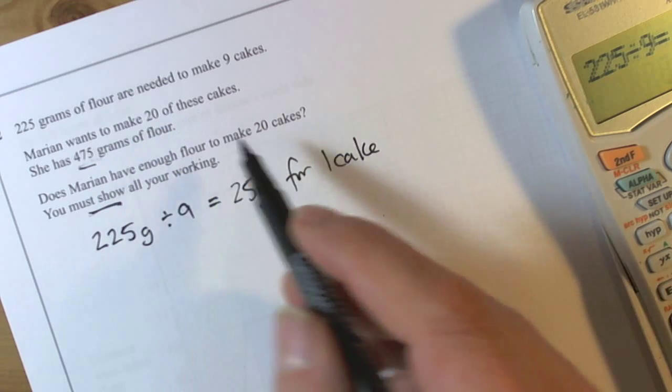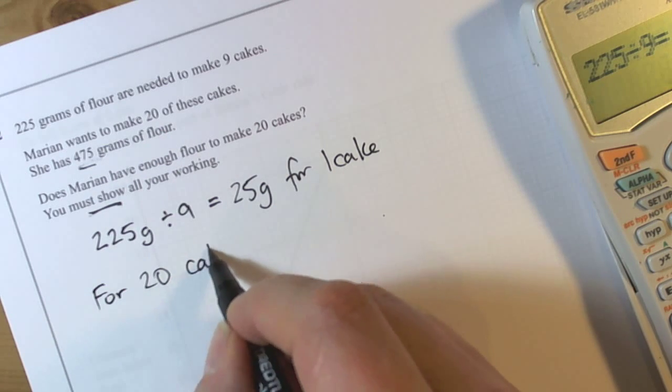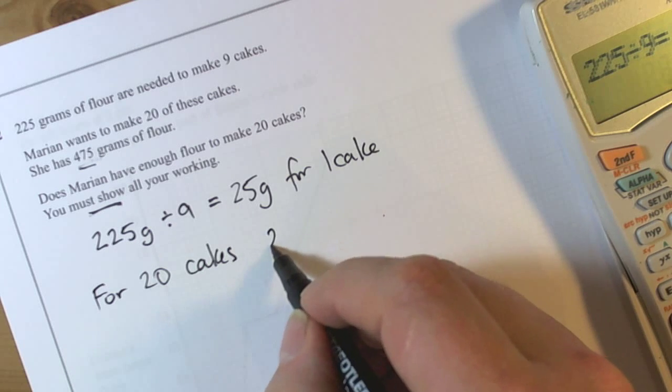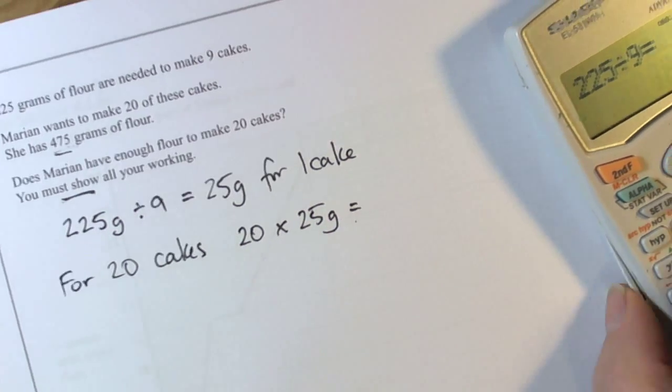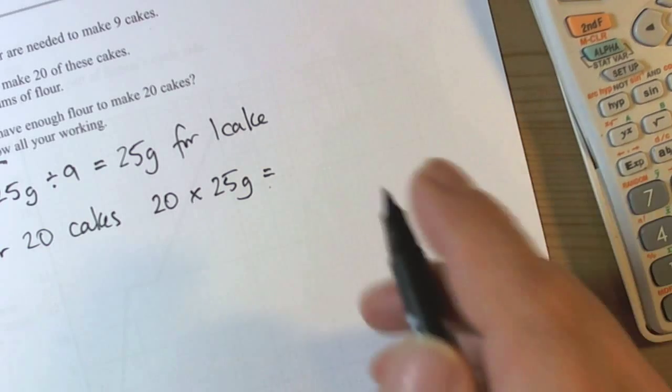We want to make 20 of these cakes, so for 20 cakes, again being really clear on our explanations, we're going to have to do 20 times 25 grams, and that's going to be 500. So 20 times 25 is 500 grams of flour needed.